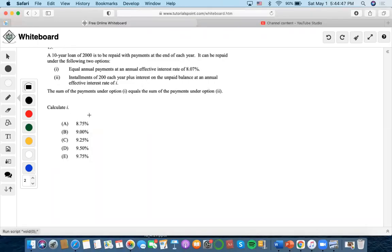Okay, so the next problem is a 10-year loan of $2,000 is to be repaid with payments at the end of each year. It can be repaid under the following two options. So equal annual payments at an annual effective interest rate of 8.07%. Well, there's a loan of $2,000. We set it equal to equal annual payments at 8.07%.